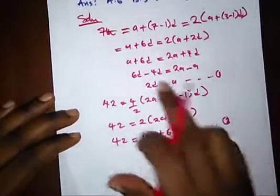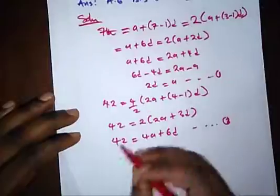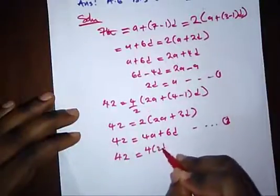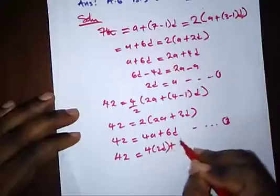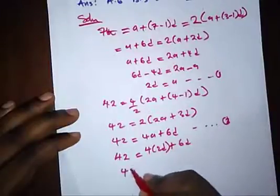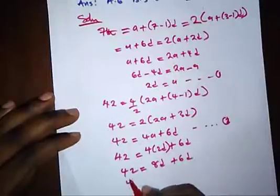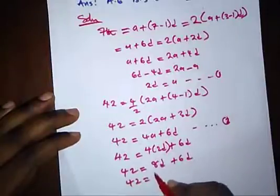So from here, we know that A is 2D. Let's just put it into this equation. We have 42 equal to 4 bracket 2D plus 6D. So we have 42 is equal to 8D plus 6D.